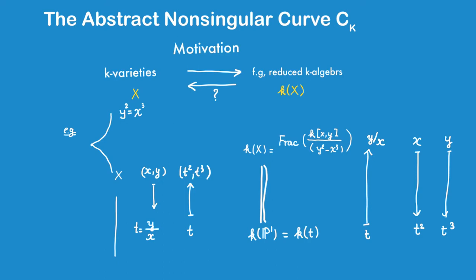The birational map could be given by sending every point p to the line through the origin and p, viewing as an element of P1. If we think in terms of A1 instead, we can think of this map as sending every point p to the slope of this line through the origin and p. This gives a birational map between the cubic curve and P1.